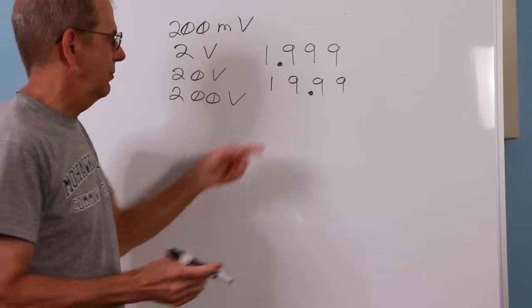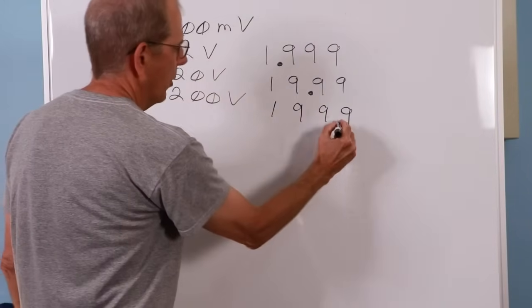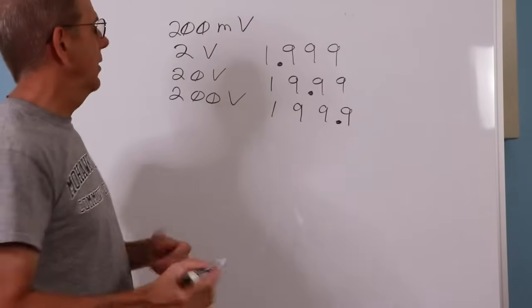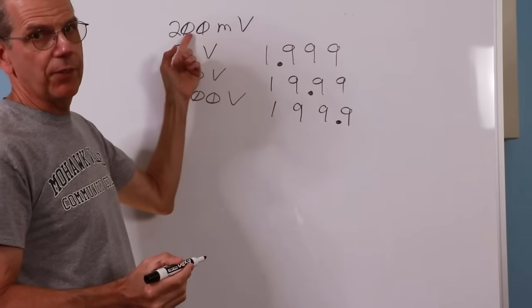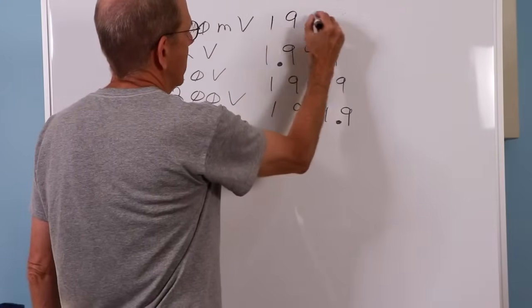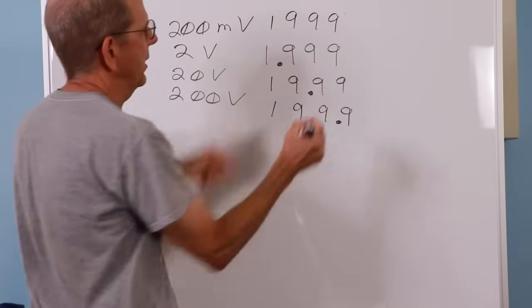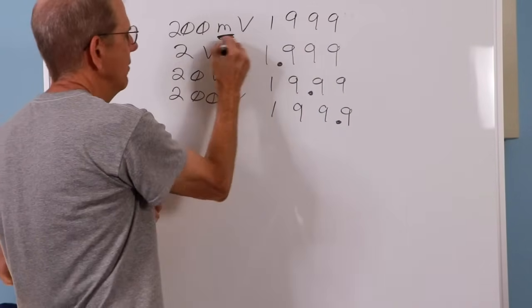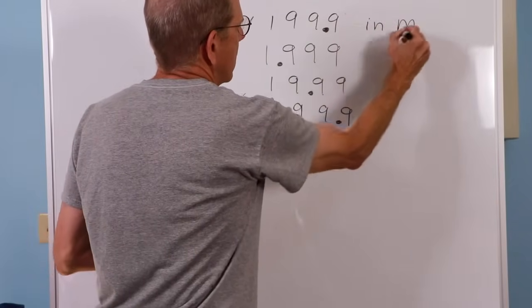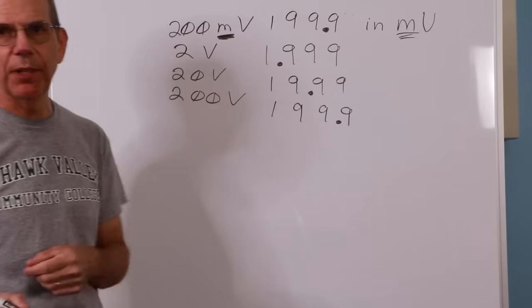On the 200, same deal. We take the 1, 9, 9, 9, and we would put the decimal point right there. 199.9 volts. And lastly, what do you think we're going to get for the 200 millivolts scale? There's our 1, 9, 9 again. Well, the decimal point, you can either think of it as being here, but typically because it's in millivolts, it will literally show up right here, but we have to just remember it's in millivolts. So we can go up to 199.9 millivolts.